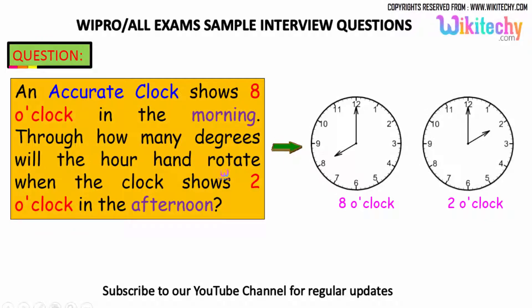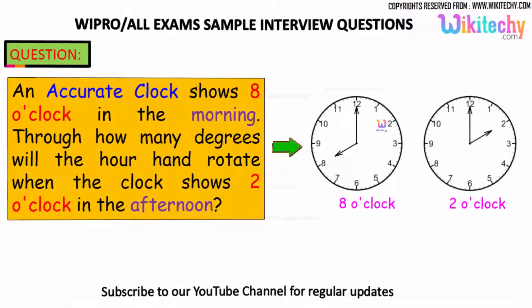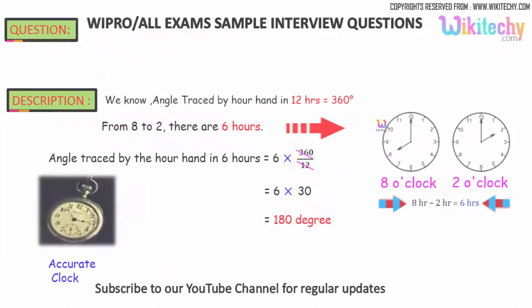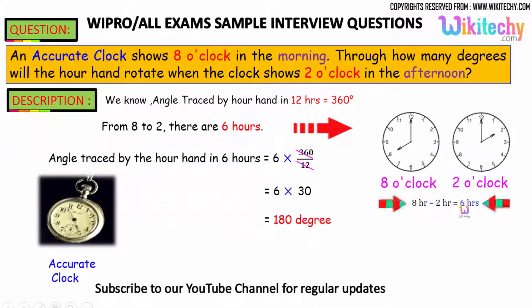Here is the question: An accurate clock shows 8 o'clock in the morning. Through how many degrees will the hour hand rotate when the clock shows 2 o'clock in the afternoon? The difference is six hours - morning 8 o'clock to afternoon 2 o'clock.